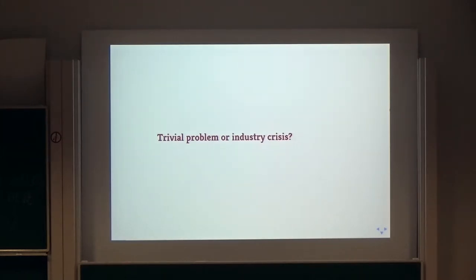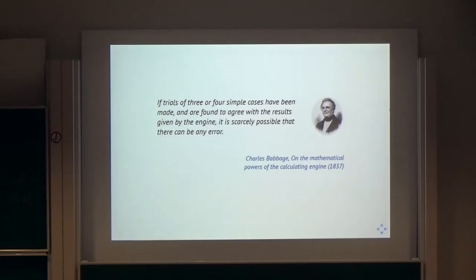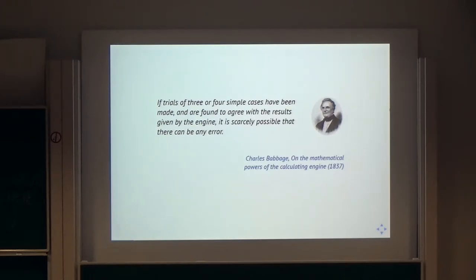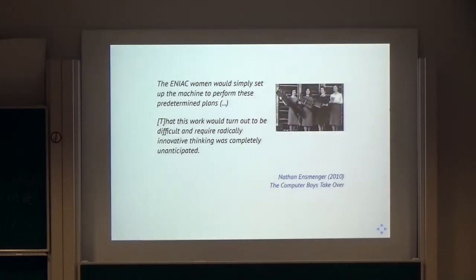The paper is structured around errors and understanding errors in programming. The first remark about errors in programming is from Charles Babbage, who says if trials of three or four simple cases have been made and are found to agree with the results given by the engine, it's scarcely possible that there can be any error. Just try your analytical engine with two cases and if it works, it works.